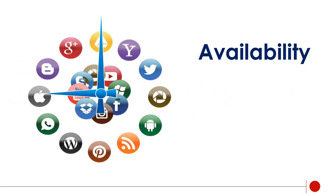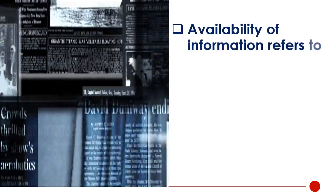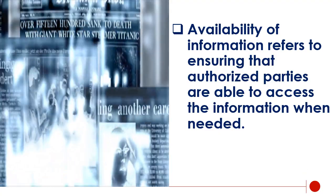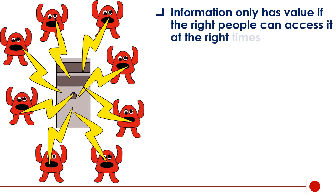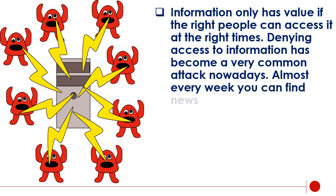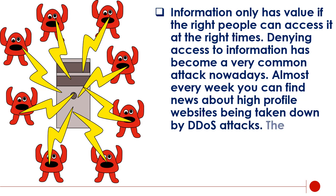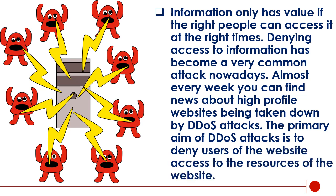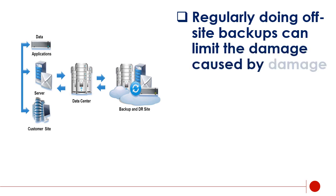Availability. Availability of information refers to ensuring that authorized parties are able to access the information when needed. Information only has value if the right people can access it at the right times. Denying access to information has become a very common attack nowadays. Almost every week you can find news about high-profile websites being taken down by DDoS attacks, whose primary aim is to deny users access to the resources of the website. Such downtime can be very costly. Other factors that could lead to lack of availability include accidents such as power outages or natural disasters such as floods.